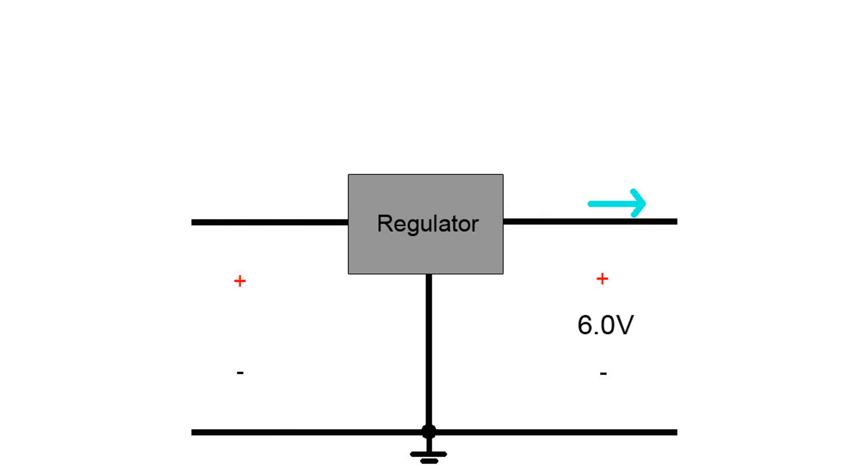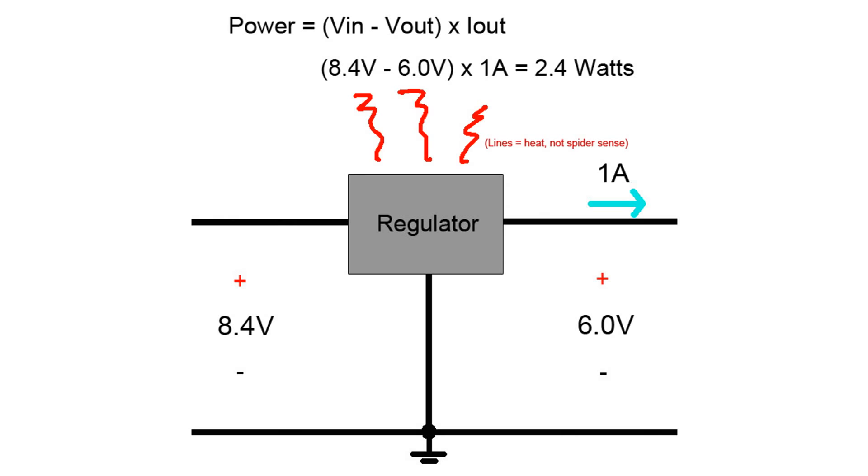So let's say you have your output set to 6 volts so you can get more speed and torque out of a servo. And let's power it from a nickel metal hydride battery charged to 8.4 volts. And let's say the servo draws 1 amp. The heat generated in the LM317 would be 2.4 watts.